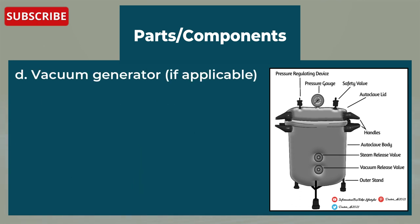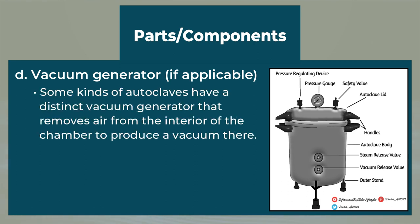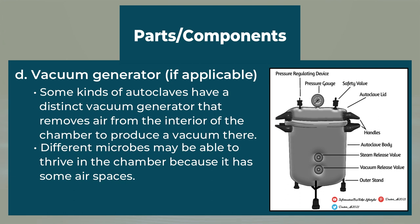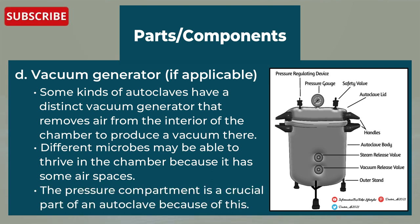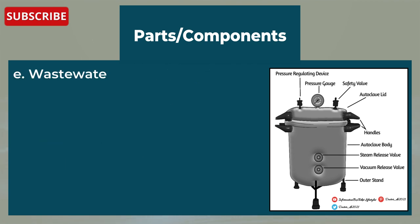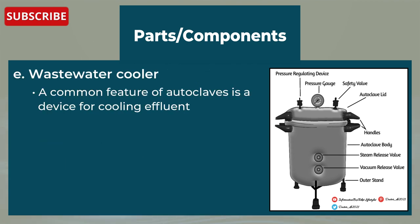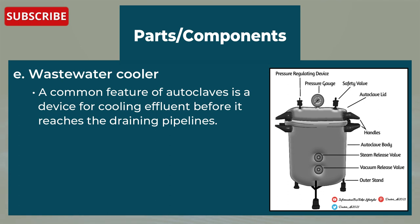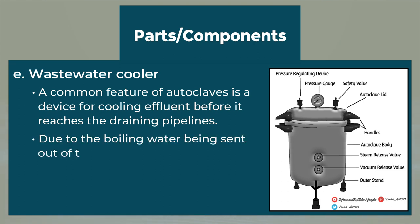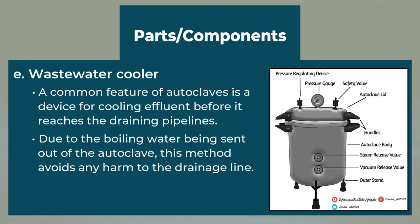Some types of autoclaves have a distinct vacuum generator that removes air from the interior of the chamber to produce a vacuum. Different microbes may be able to survive in the chamber because of air spaces, which is why the pressure compartment is crucial. Lastly, a wastewater cooler is a common feature of autoclaves — a device for cooling effluent before it reaches the draining pipelines, avoiding any harm to the drainage line from boiling water being sent out of the autoclave.